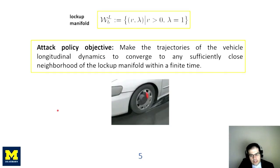So, with this description, we can now state the attack policy objective. Basically, the end goal of the adversary is to cause the states of the vehicle traction dynamics to converge to the lockup manifold, which is this manifold, where the wheel slip would become equal to one.